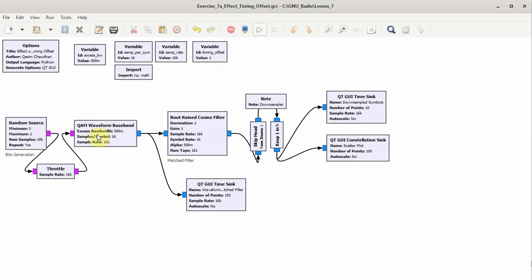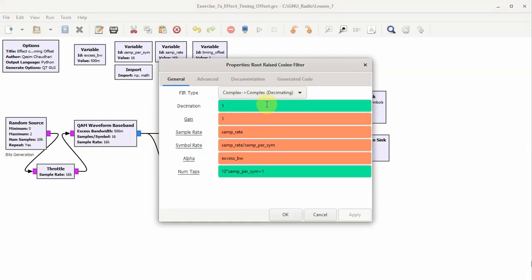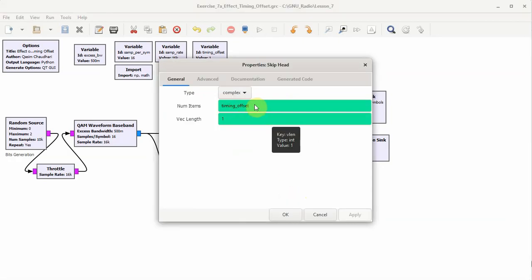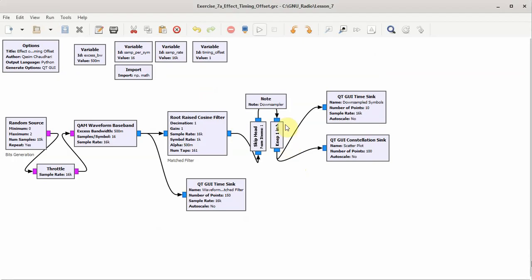After the bit generation, the input is given to a QAM baseband block which we have made ourselves, and its output is given to a matched filter which is a root raised cosine filter. Notice that I haven't chosen any decimation factor here. This is because I want to choose the sample at which I decimate by myself. The sample which eventually maps to the symbol decision here is the skip head block where we are introducing the timing offset. This is the downsampler where we are throwing samples per symbol minus 1 samples out of every samples per symbol samples. In this case, 15 out of every 16 samples are being thrown. Let us run and check the output of this flow graph.